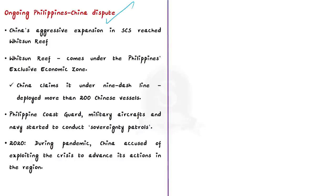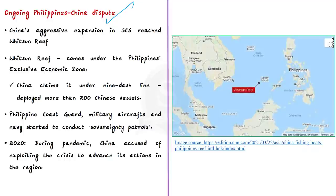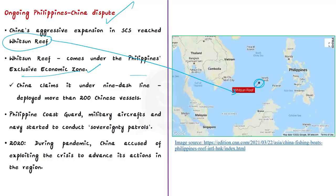The Philippines-China dispute began when China's aggressive expansion in the South China Sea reached the Whitsun Reef, which comes under the Philippines' exclusive economic zone. China claims the reef is part of its nine-dash line territory and deployed more than 200 Chinese vessels in the region. The dispute worsened when the Philippine Coast Guard, military aircraft, and Navy began conducting sovereign patrols to protect national sovereignty and marine resources at Whitsun Reef.